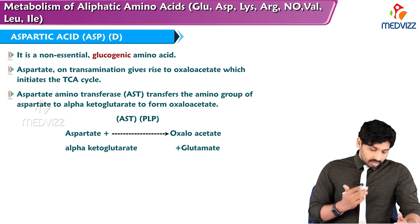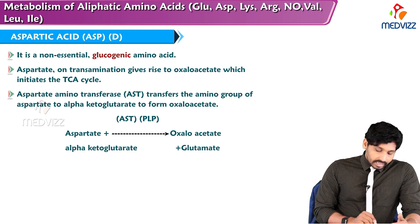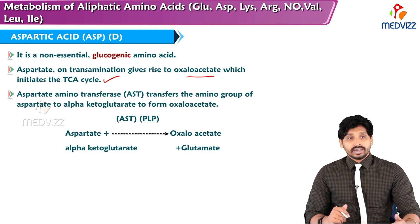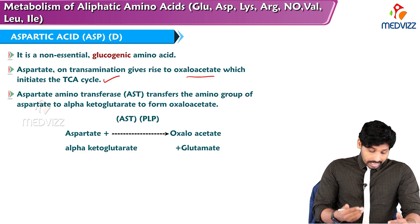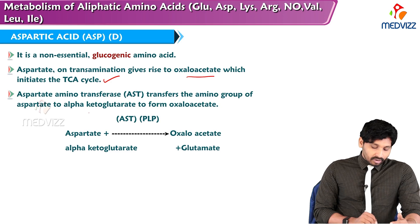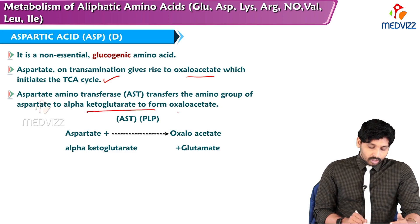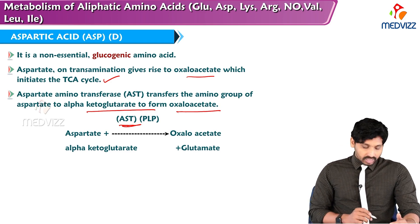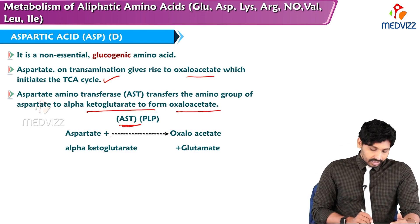Aspartic acid is also a non-essential glucogenic amino acid. Aspartate via transamination gives rise to oxaloacetate, which enters the TCA cycle — that's why it is glucogenic. The enzyme aspartate aminotransferase (AST) transfers the amino group of aspartate to alpha-ketoglutarate to form oxaloacetate; it is PLP-dependent.